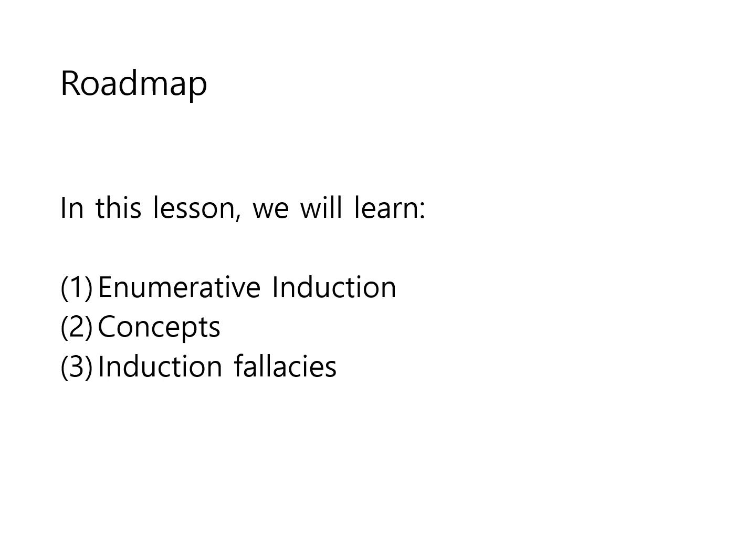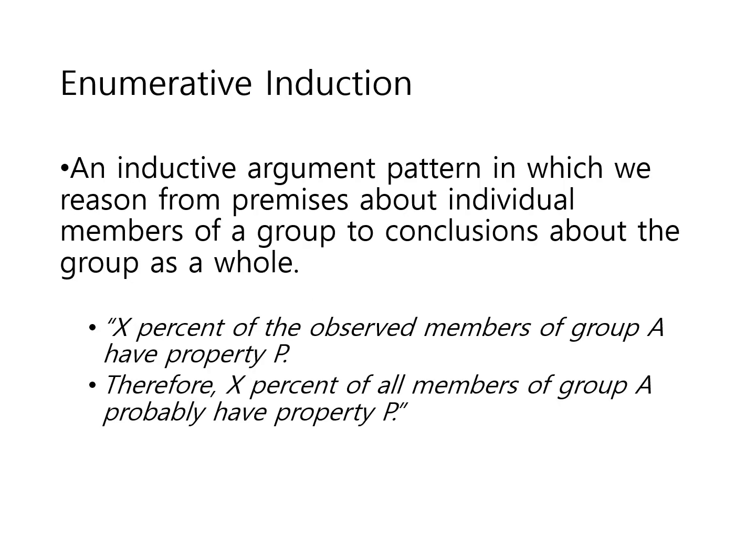And then we'll conclude with induction fallacies. An enumerative induction is an argument pattern in which we reason from premises about individual members of a group to conclusions about the group as a whole. So let's say you have x% of the observed members of group A have property P. Therefore, we conclude that x% of all members of group A probably have property P.